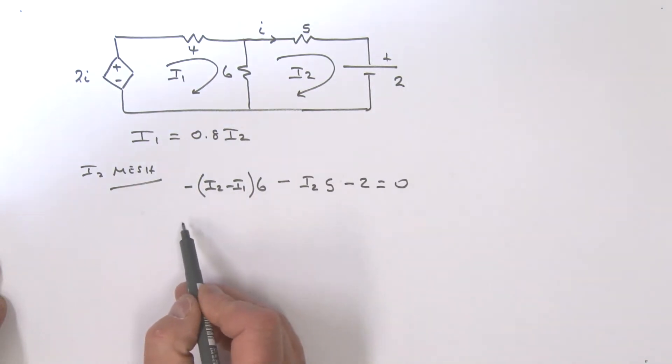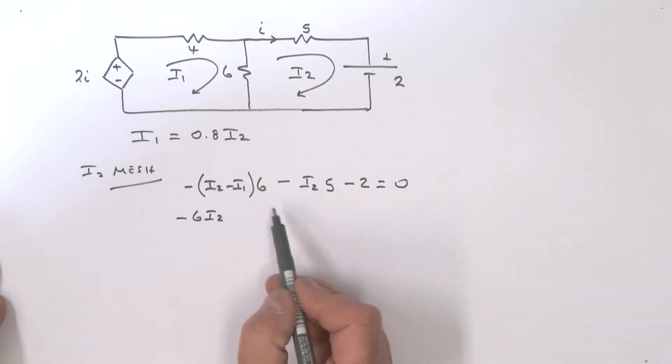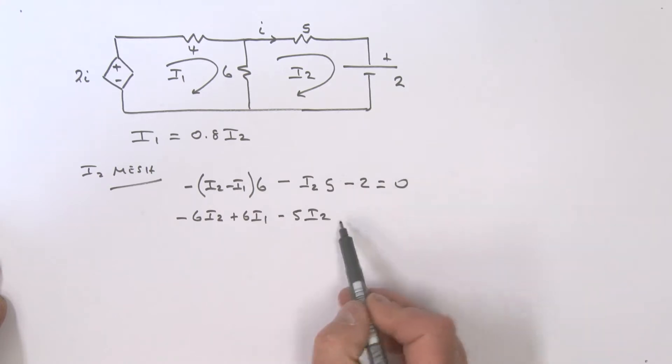Let's expand this out. We've got a minus 6 I2, minus times a minus is a plus, so that's a plus 6 I1. We've got our minus 5 I2s sitting there, and taking that 2 to the other side, all of that is equal to 2.